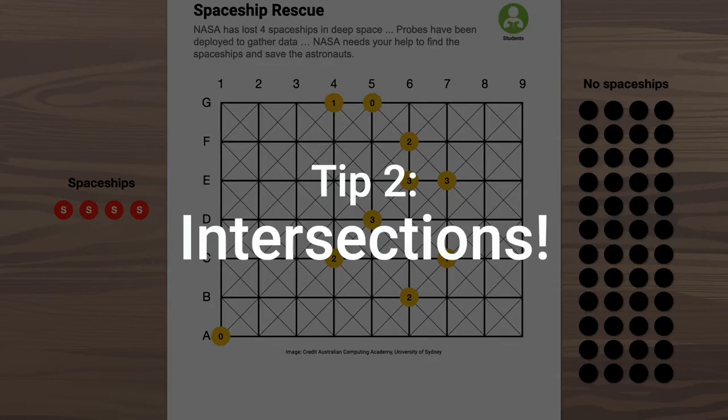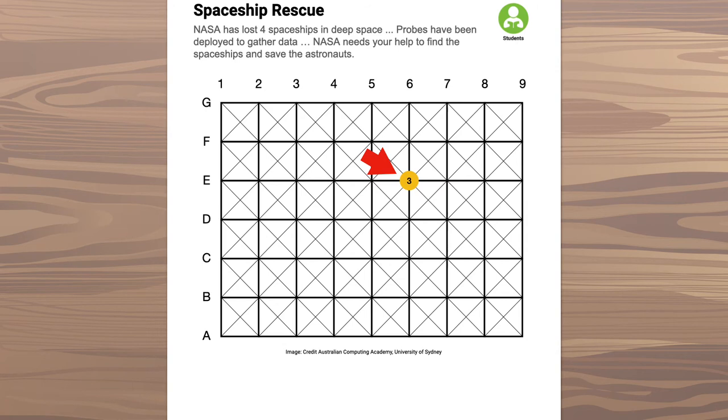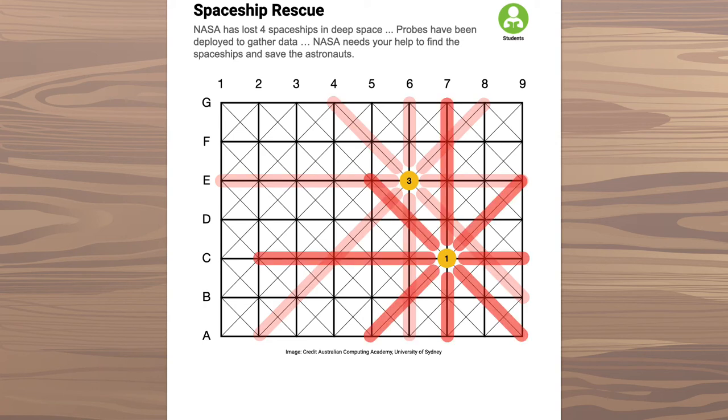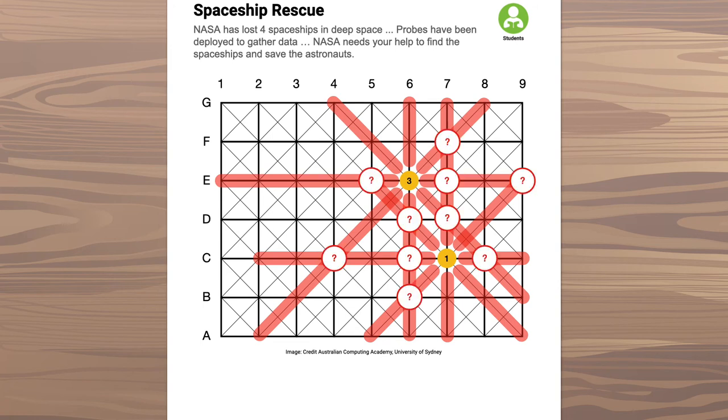Places where lines from multiple probes intersect are good places to hunt for lost spaceships. See, this probe can see three spaceships somewhere along these lines. But this probe can see just one spaceship. Now, look at the places where their lines cross over.